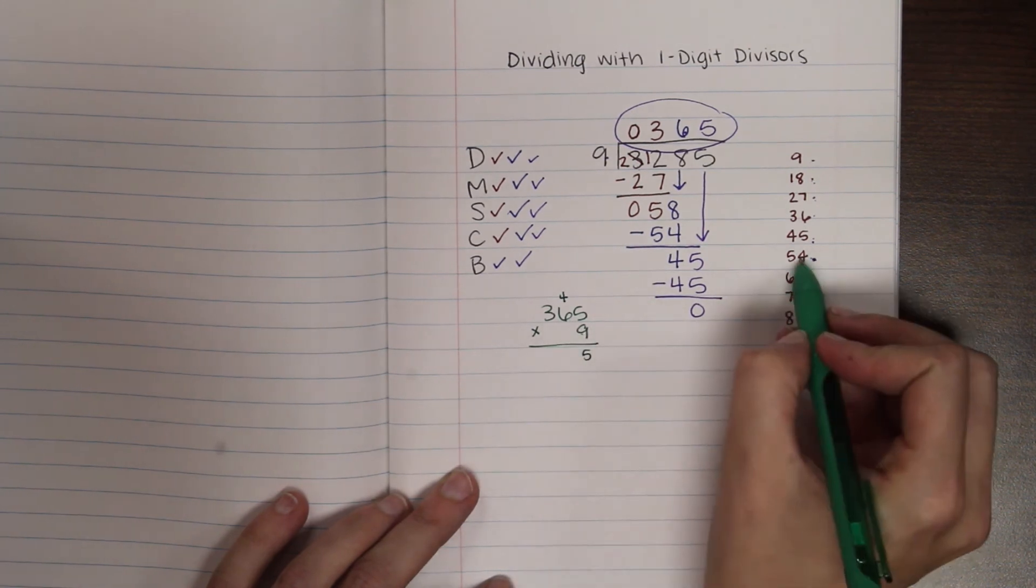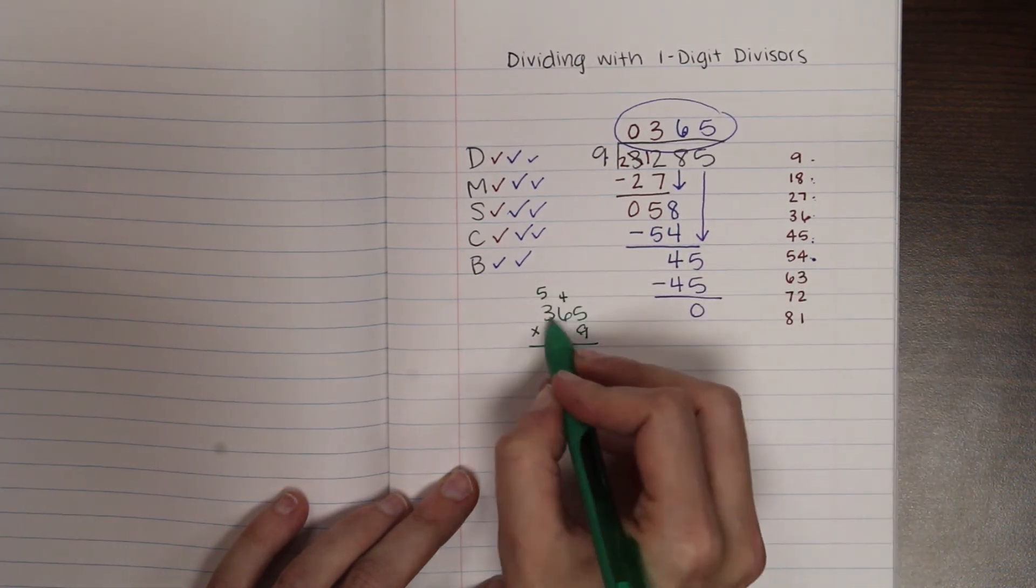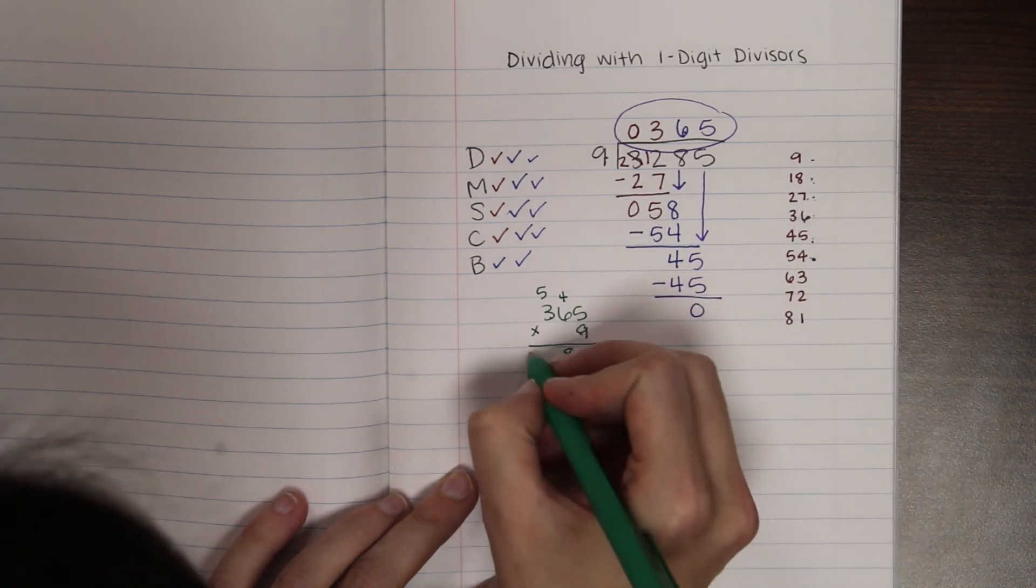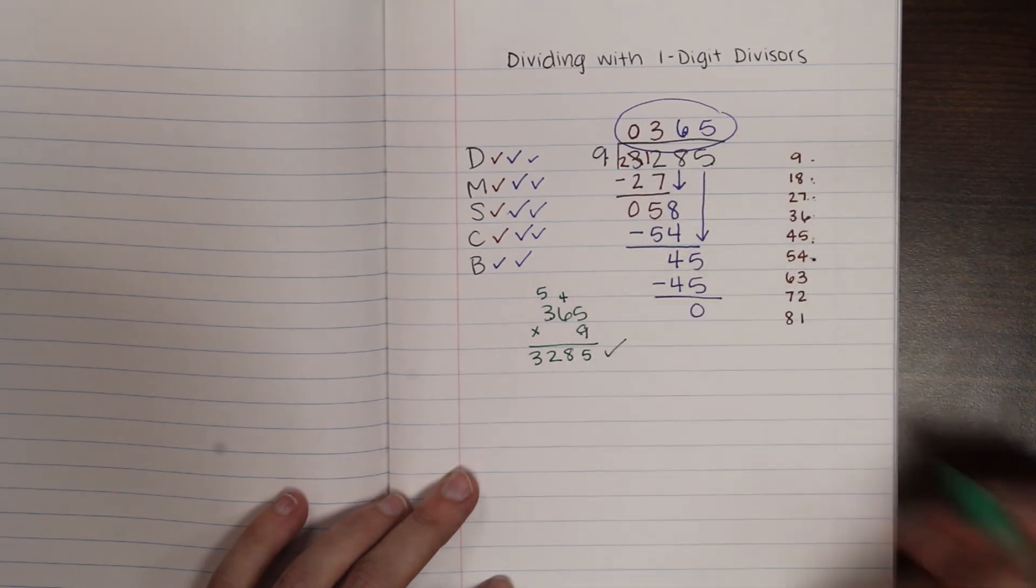So 9 times 6 is 54. Plus 4 is 58. 9 times 3 is 27. Plus 5 gives me 32. So 3,285. It matches my dividend, so I know that I'm right.